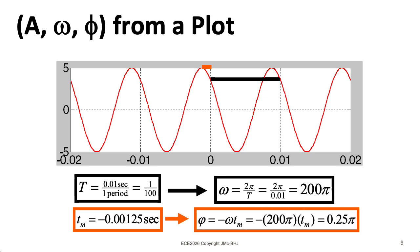And then I can compute the phase using this formula minus omega tm. That's going to give me minus 200π, because that's my omega. And then if I take my tm of minus 0.00125 seconds and plug that into here, that will give me 0.25π.